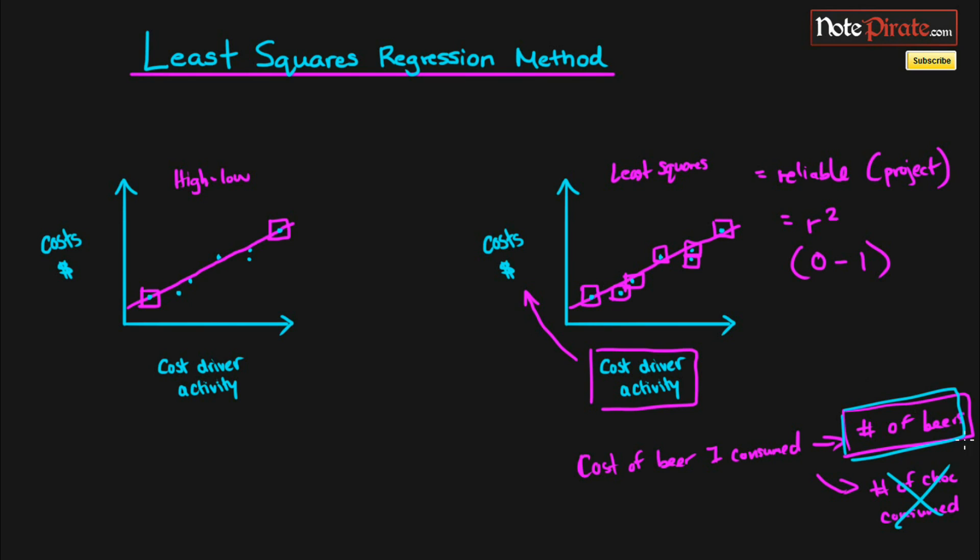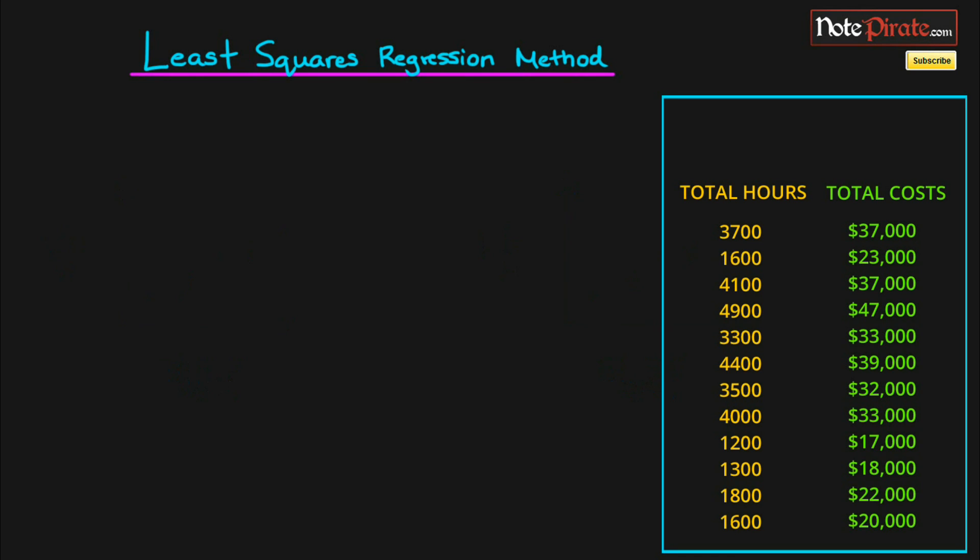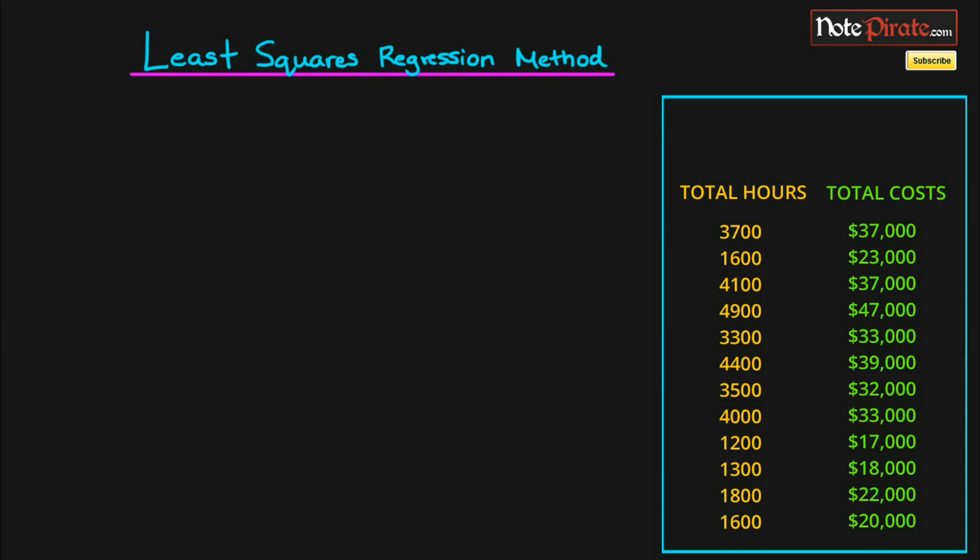Let's cover how to calculate our cost function using a couple equations. I'm going to bring up the stats that we're going to be using. We are creating a cost function for maintenance costs, and total hours are the x variable and total costs are the y variable, because the hours determine the total cost.